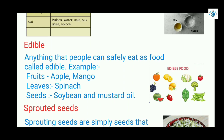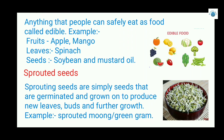Sprouted seeds are simply seeds that are germinated and grown to produce new leaves and further growth. In this picture you can see sprouted green gram — you can see it coming out of the white side. This is germination, and from there leaves grow further. This is an example of sprouted seeds.